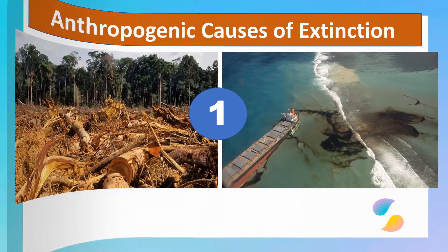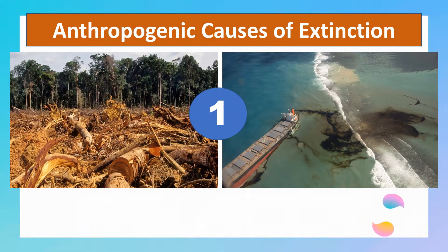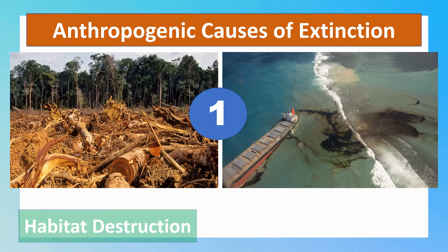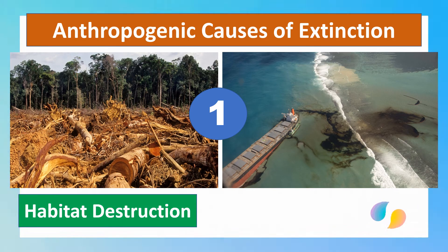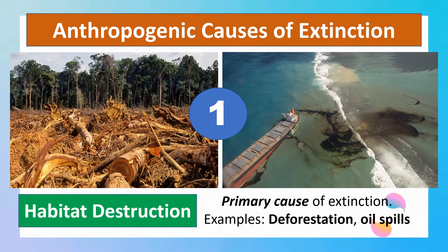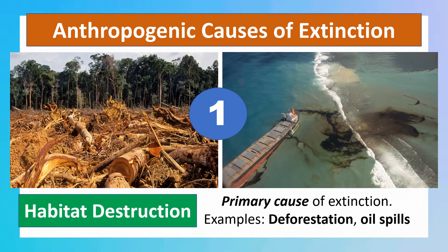Now let us study the different anthropogenic causes of extinction — the factors made by humans. First is habitat destruction, which is considered the primary cause of extinction. It is connected to different human activities such as deforestation and oil spills.